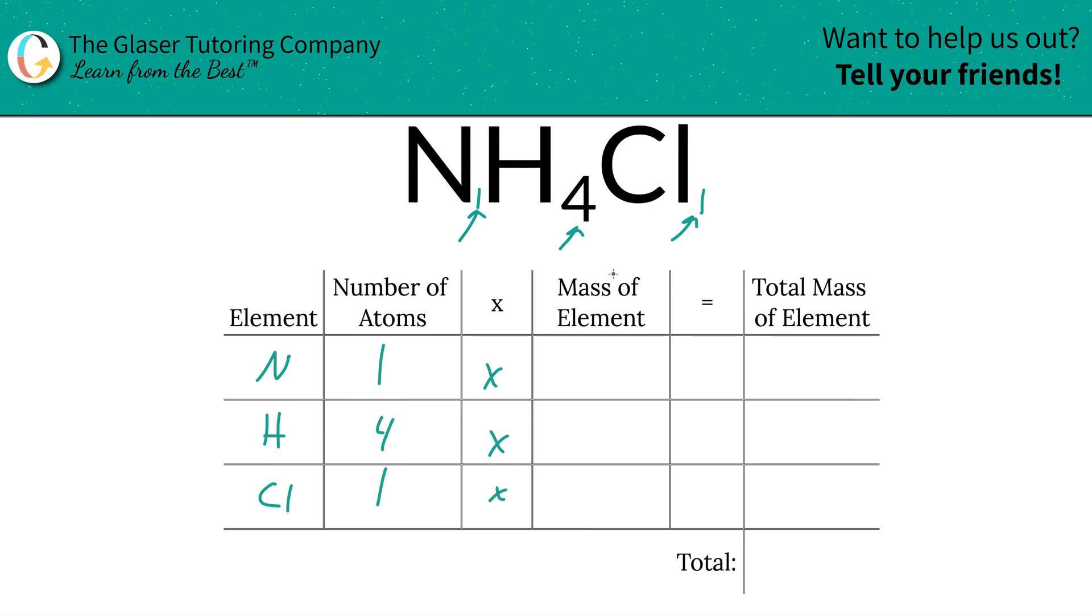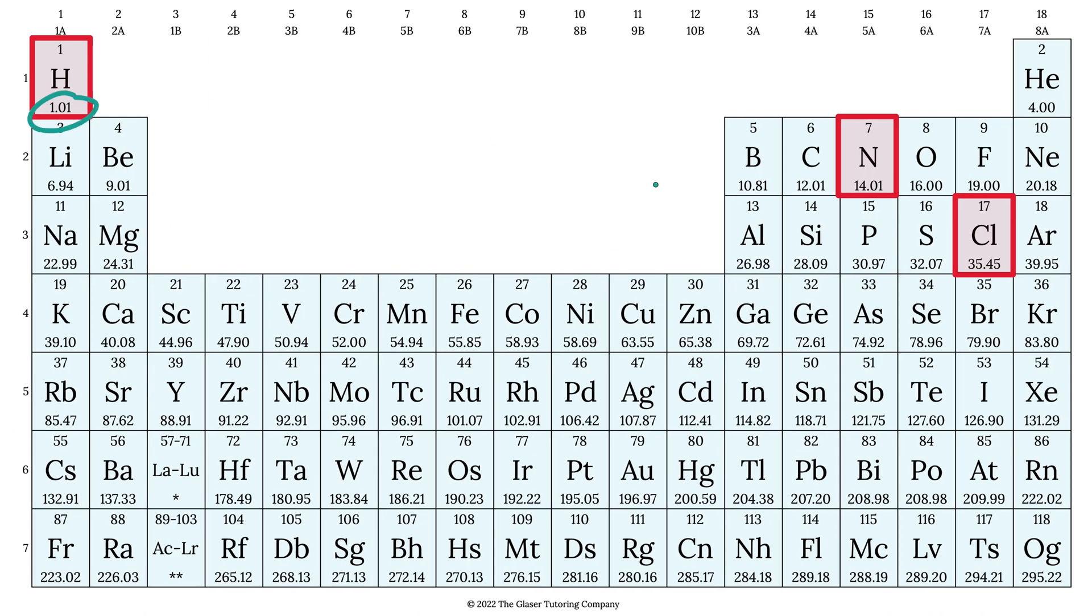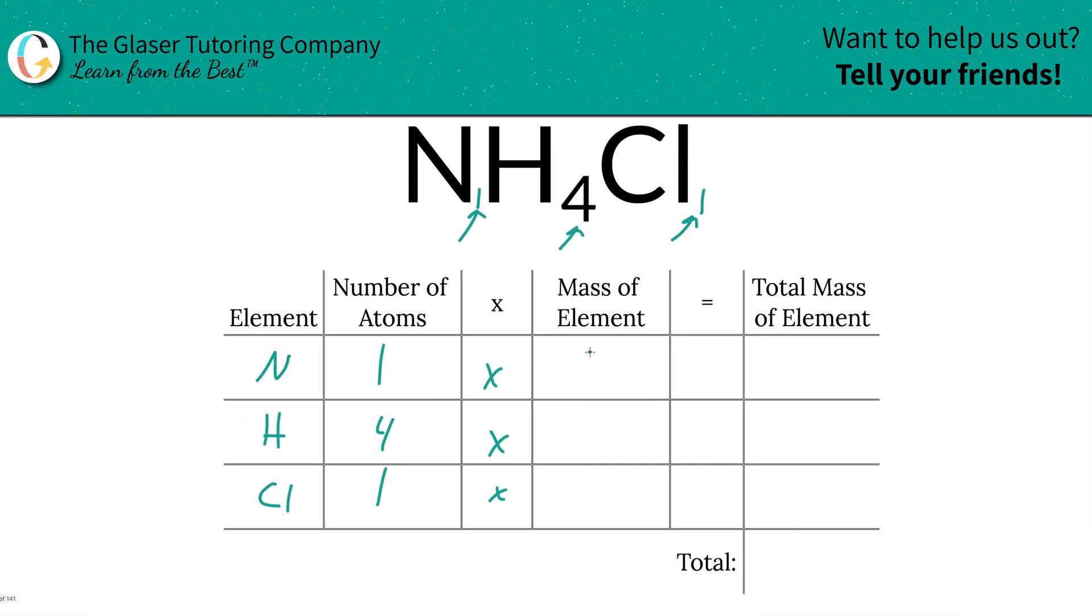Then we're going to take those number of atoms and multiply it by the mass of each element. That's where the periodic table comes into play. So take a look: hydrogen's mass is 1.01, nitrogen is 14.01, and chlorine is 35.45. So this is going to be 14.01 for nitrogen, 1.01 for hydrogen, and then chlorine was 35.45.